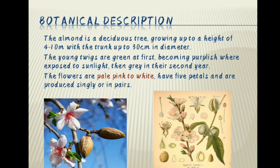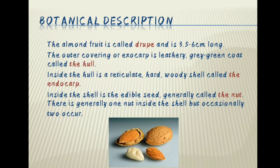Botanical description. The almond is a deciduous tree growing up to a height of 4 to 10 meters with the trunk up to 30 cm in diameter. The young twigs are green at first, becoming purplish when exposed to sunlight, then grey in their second year. The flowers are pale pink to white and have 5 petals and are produced singly or in pairs. The almond fruit is called a drupe and is 3.5 to 6 cm long. The outer covering or exocarp is leathery, grey-green coat called the hull.